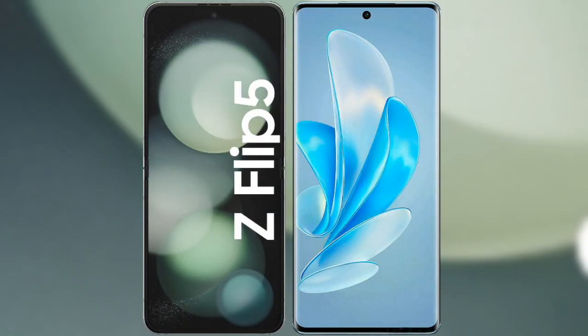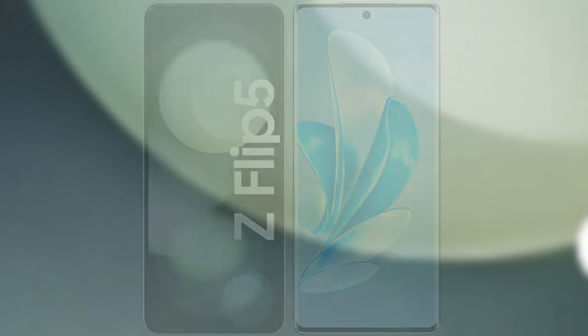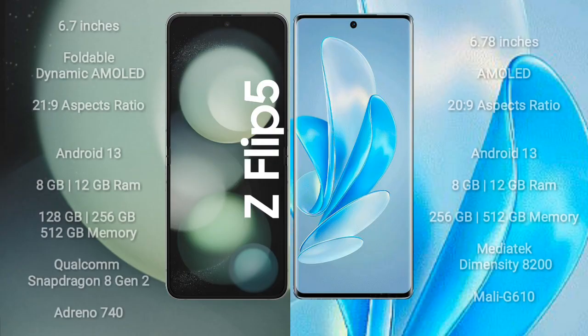I will compare the new Samsung Galaxy Z Flip 5 with the Vivo A70 Pro. The Samsung Galaxy Z Flip 5 comes with a 6.7-inch Dynamic AMOLED display. The Vivo A70 Pro features a 6.78-inch AMOLED display.